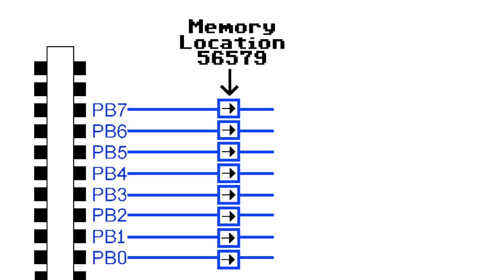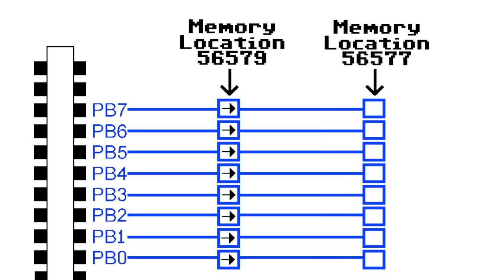The other memory location we need is 56577. This is where actual reading and writing happens. Since everything is set to output mode, we can write an 8-bit value to this register and each bit represents the state of each pin. Let me demonstrate this.